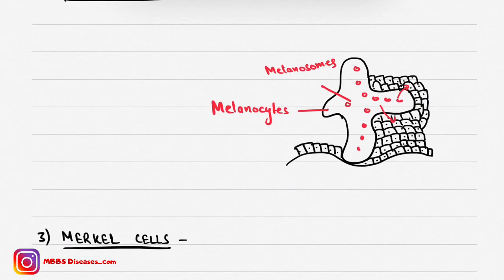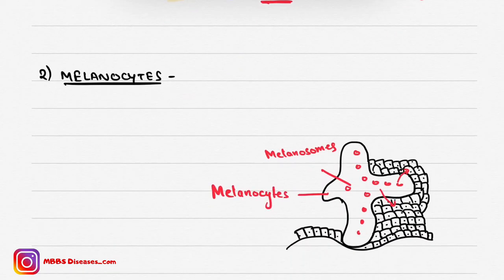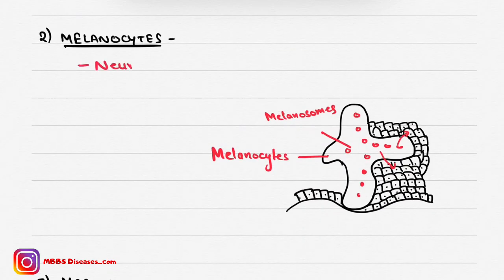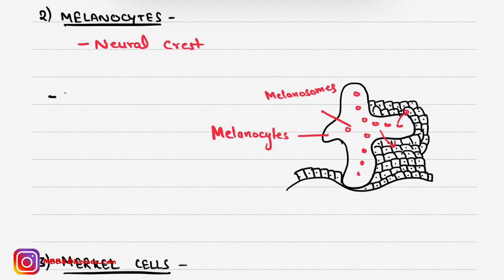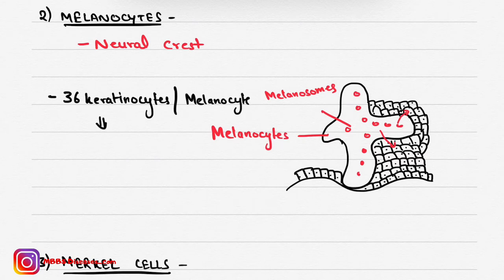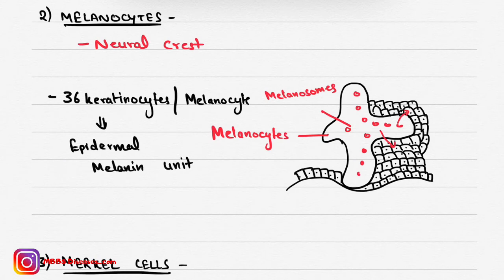Melanocytes are present in the stratum basale layer, which is the deepest layer, and these cells are derived from the neural crest. There are 36 keratinocytes per melanocyte, and this unit is known as the epidermal melanin unit. Melanocytes are responsible for skin color — different skin colors in different people are due to the melanin produced by melanocytes.